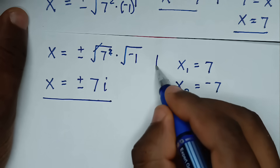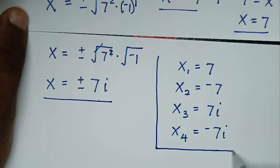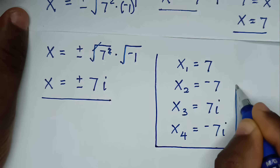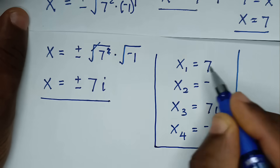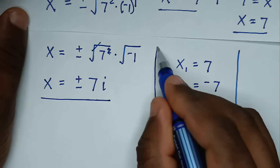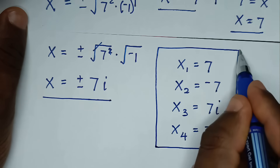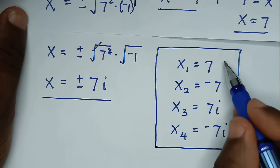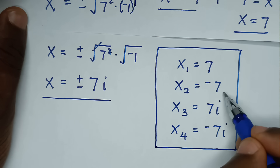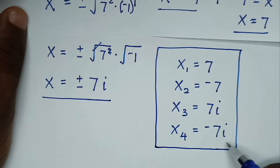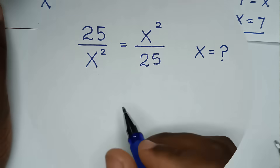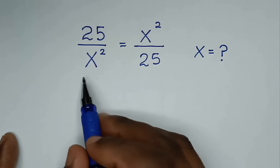Therefore, the conclusion: the first value of x is 7, the second value is negative 7, the third value is 7i, and the fourth value is negative 7i. We have two real solutions and two complex solutions.